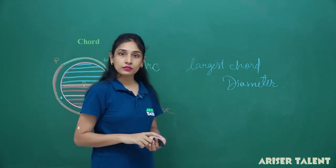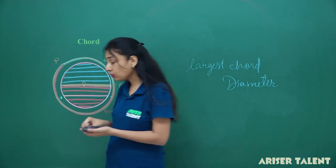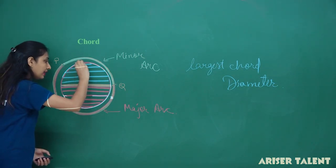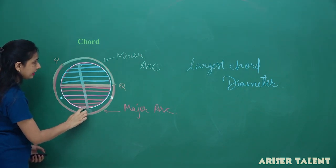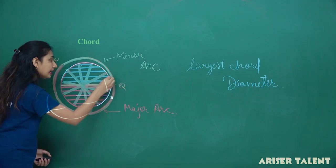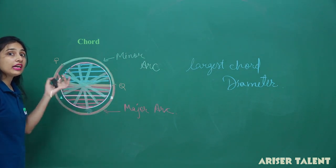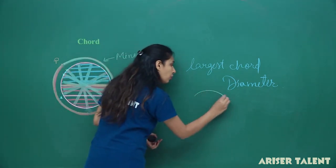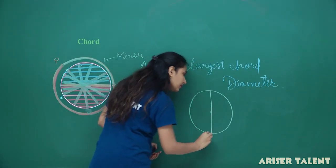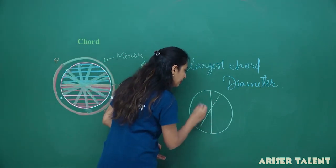Do we have only one diameter? The length of diameter can be one, but we can draw infinite diameters in a circle. Like this is one, I am drawing the diameter again — can I have this as diameter? Can I have this? Can I have this? So there are infinite number of diameters in a circle. Any line passing through the center and intersecting the circumference is the diameter.